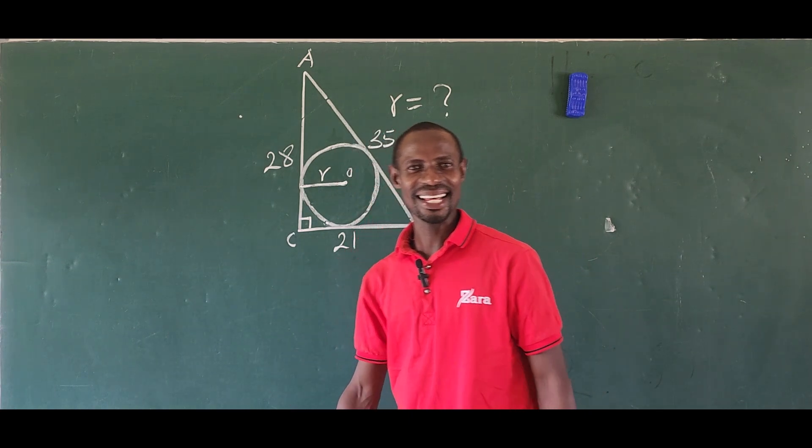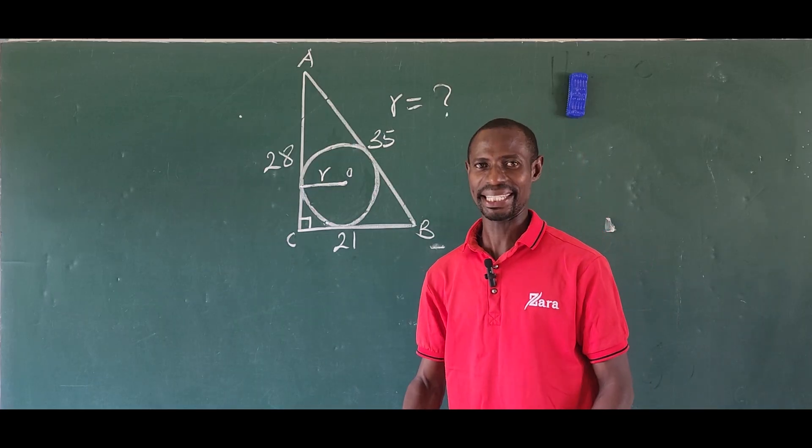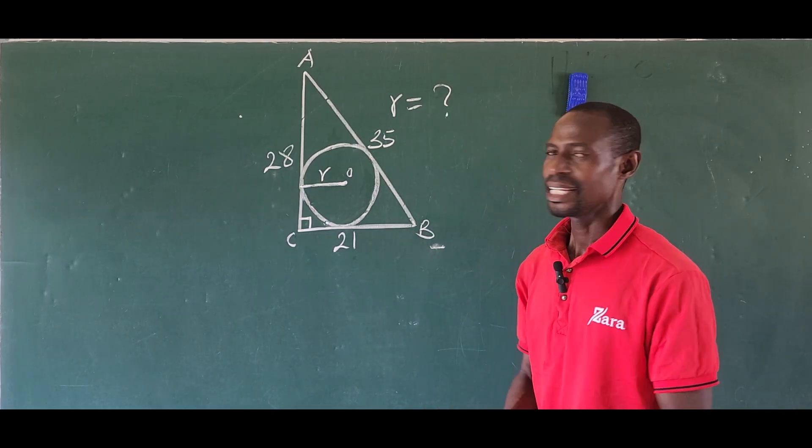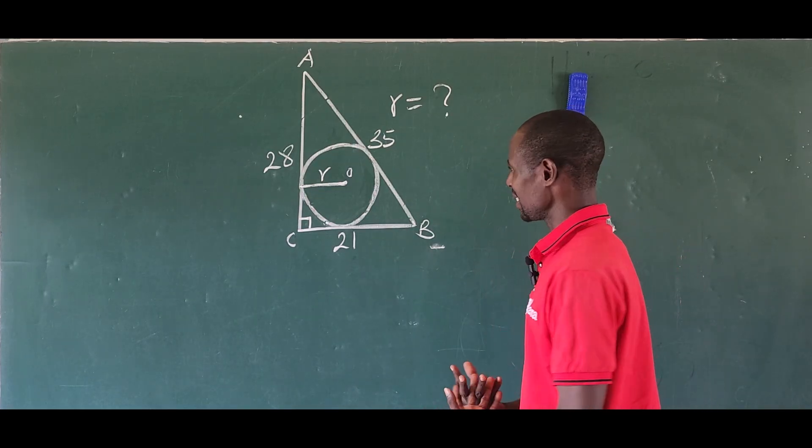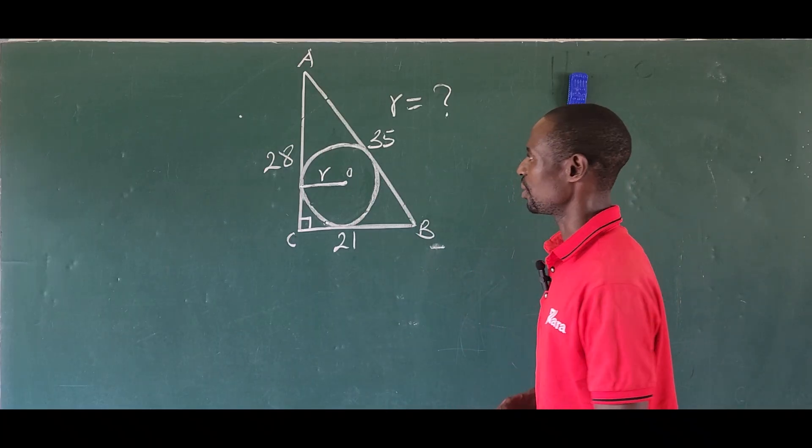Hello everyone, welcome to today's class. Here we have a nice problem. We have a triangle and a circle together. The circle is inscribed inside the right-angled triangle.